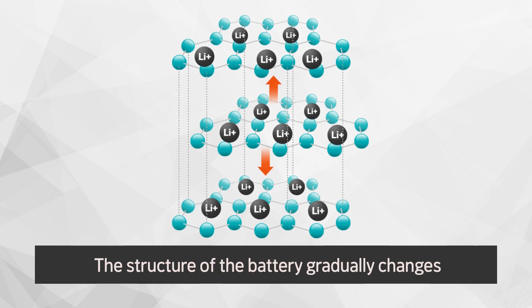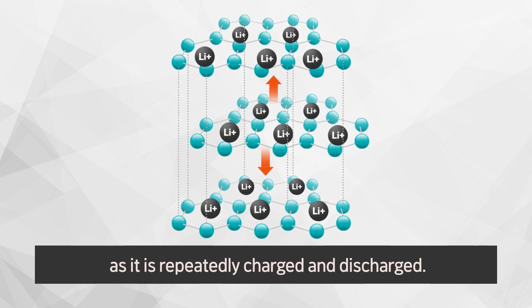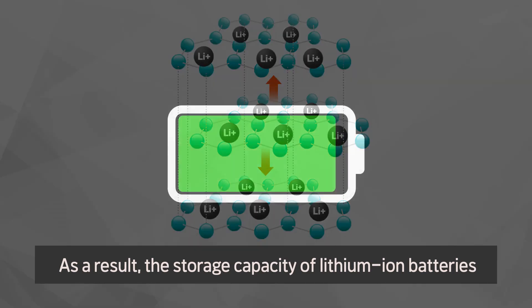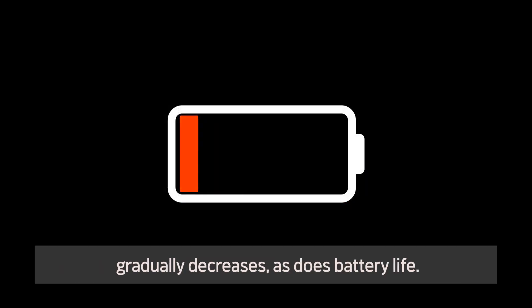The structure of the battery gradually changes as it is repeatedly charged and discharged. As a result, the storage capacity of lithium-ion batteries gradually decreases, as does battery life.